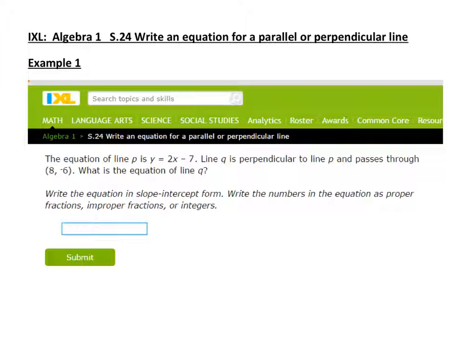So this first one is on perpendicular lines. We've got an equation of line P, which is y equals 2x minus 7. We're looking to write the equation of line Q. We're told that line Q is perpendicular to P, and passes through this point, 8, negative 6.